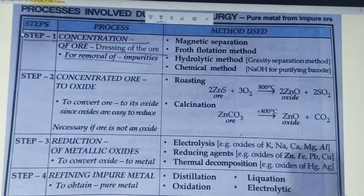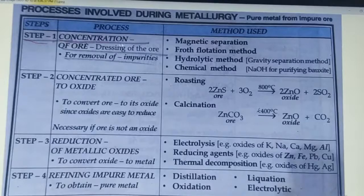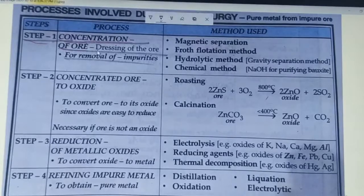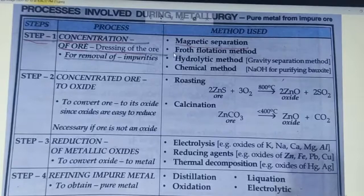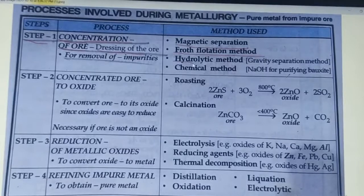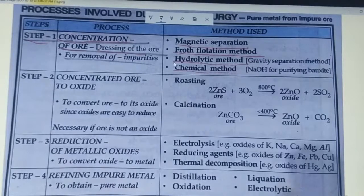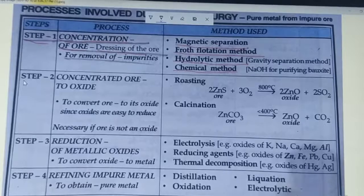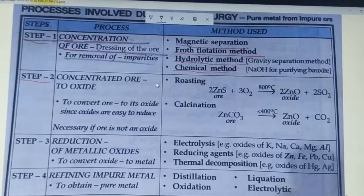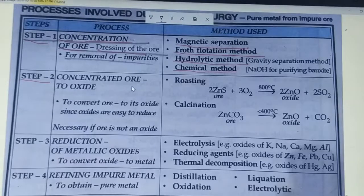We can do metallurgy in four steps. Step 1 is concentration of ore, also known as dressing of ore. It is done by magnetic separation, froth flotation method, hydraulic method, and chemical method. By these four methods, you can remove impurities by physical methods. After doing concentration, we will use the second step. If the ore is not in oxide form, then we will have to convert it into oxide because metal oxides are easy to reduce.